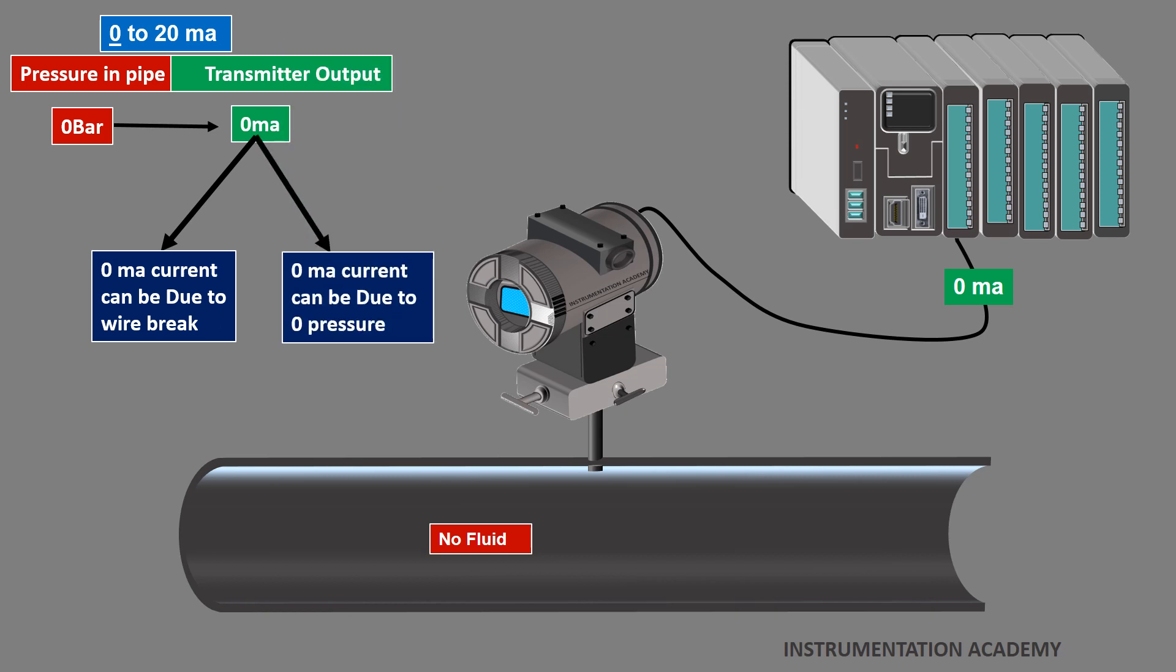Hence, if the transmitter is calibrated to generate current signal in the range of 4 to 20 mA, the faults like wire breaks can be easily detected. But this reason is a secondary reason for the widespread use of 4 to 20 mA signal.